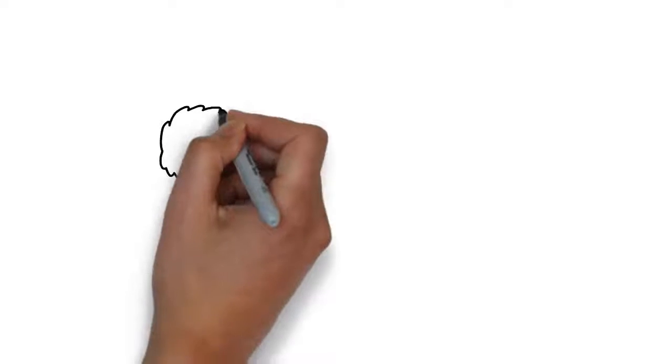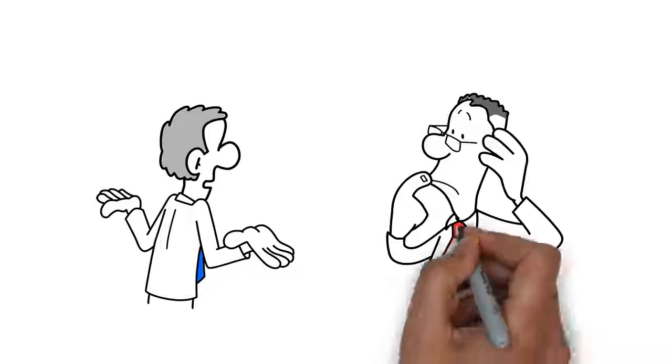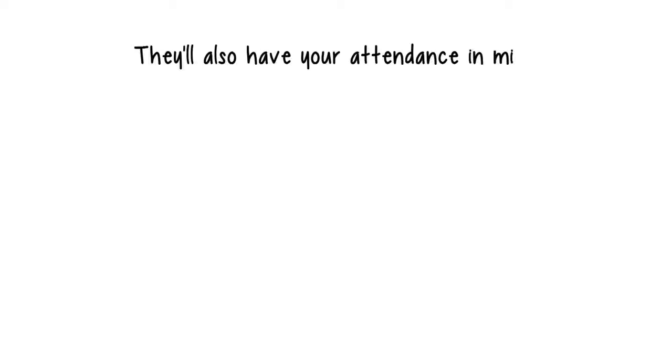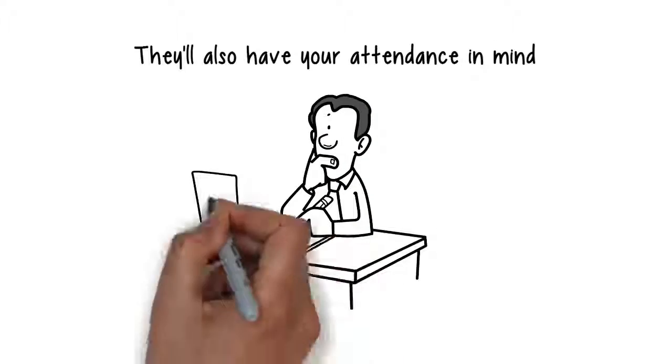For example, if you go to them saying you don't understand a topic and they see you've missed a lot of lessons on that subject, they may suggest you go back and look over your notes instead of giving you one-on-one support. They'll also have your attendance in mind when marking and will be suspicious if a student does well with low attendance.